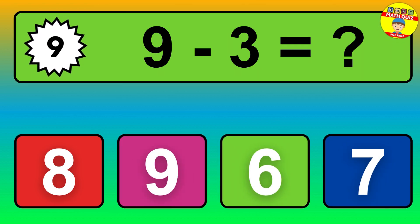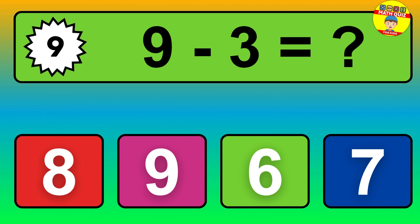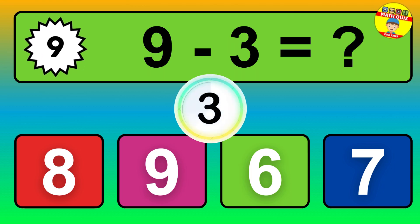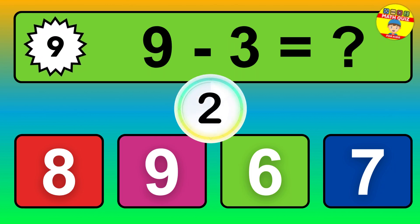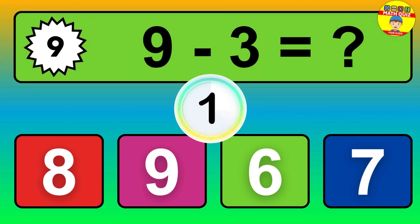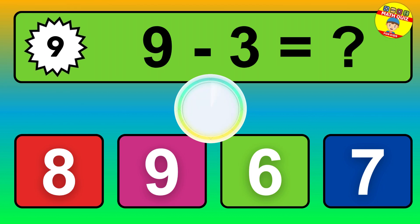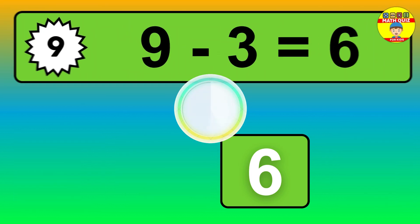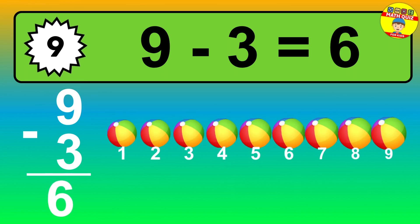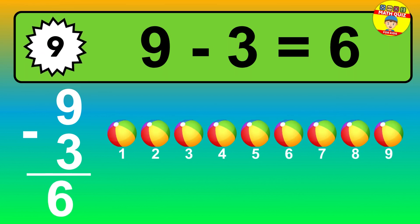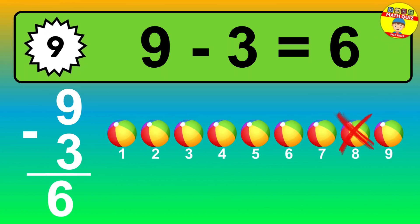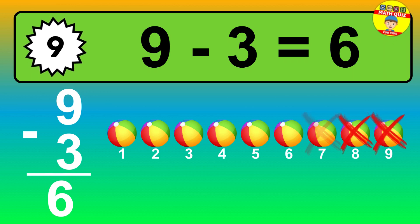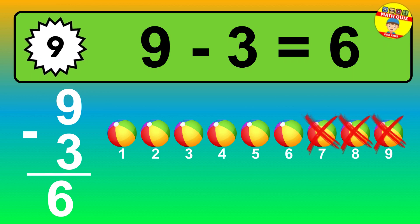Question 9. 9 minus 3 equals what? The answer is 9 minus 3 is 6. Let's count it. 1, 2, 3, 4, 5, 6.